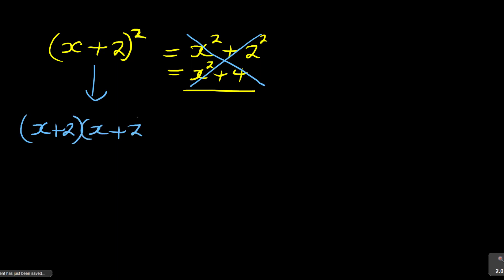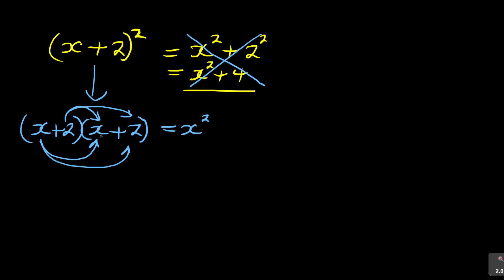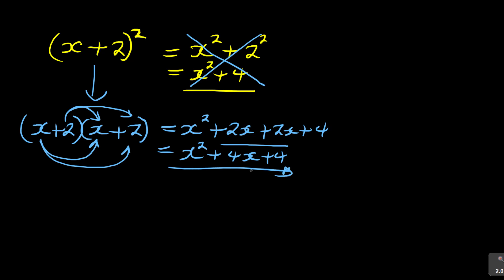What you must remember is (x + 2)² means (x + 2)(x + 2) — it's happening twice. Then you use the FOIL method: x·x = x², x·2 = 2x, 2·x = 2x, 2·2 = 4. Combine the middle terms: you get x² + 4x + 4.